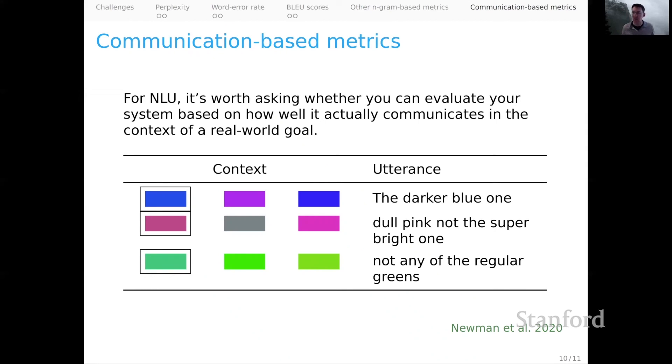Rather, our fundamental notion was listener accuracy, which was keying into a communication goal. How well is your system actually able to take messages and use them to figure out what the speaker was referring to in a simple color context. And for much more on that and a perspective on a lot of these issues, I encourage you to check out this paper that was led by Ben Newman. It began as a course project for this class and grew into a really successful paper.